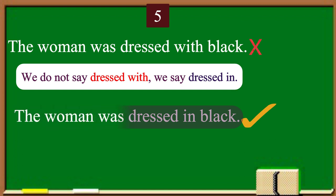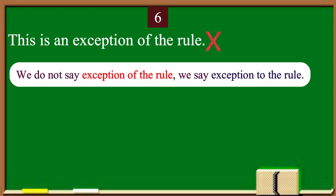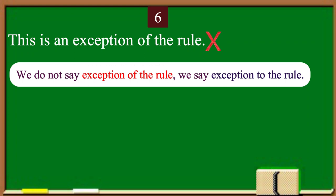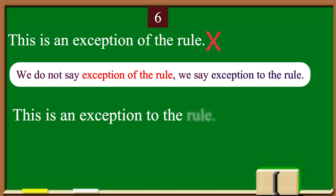Number 6 is: this is an exception of the rule — this is incorrect. We do not say exception of the rule; we say exception to the rule. Please repeat the correct sentence after me: This is an exception to the rule.